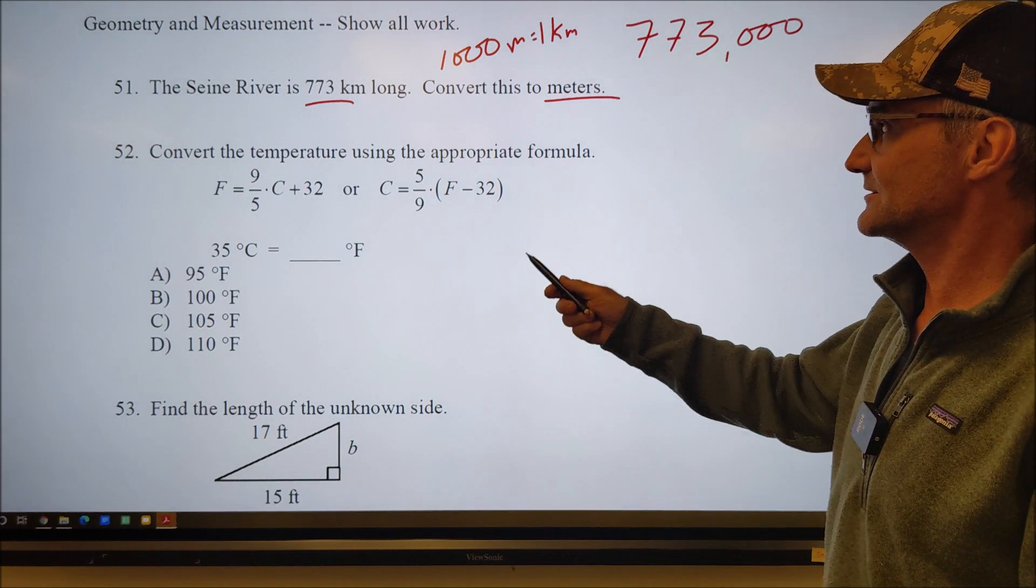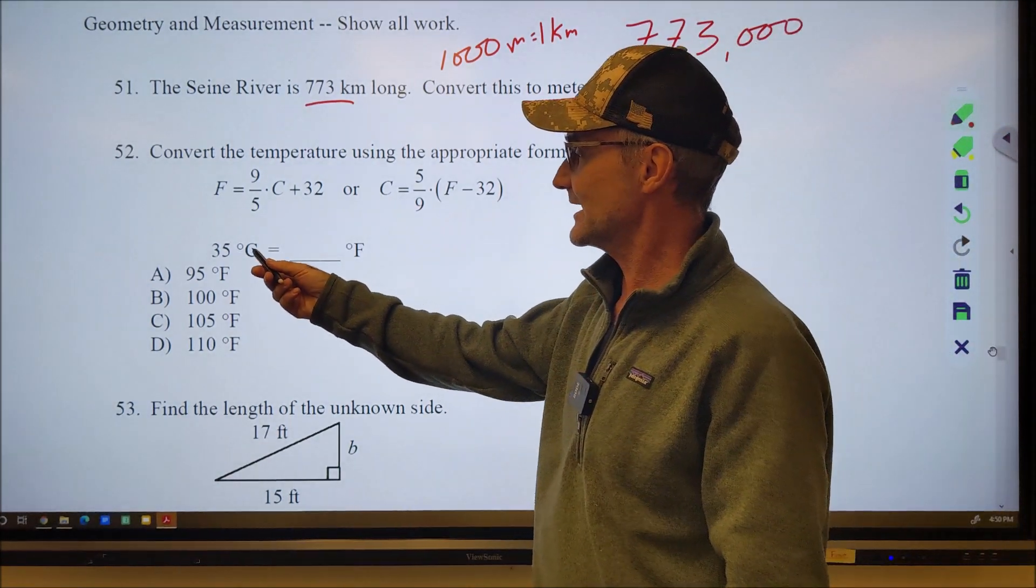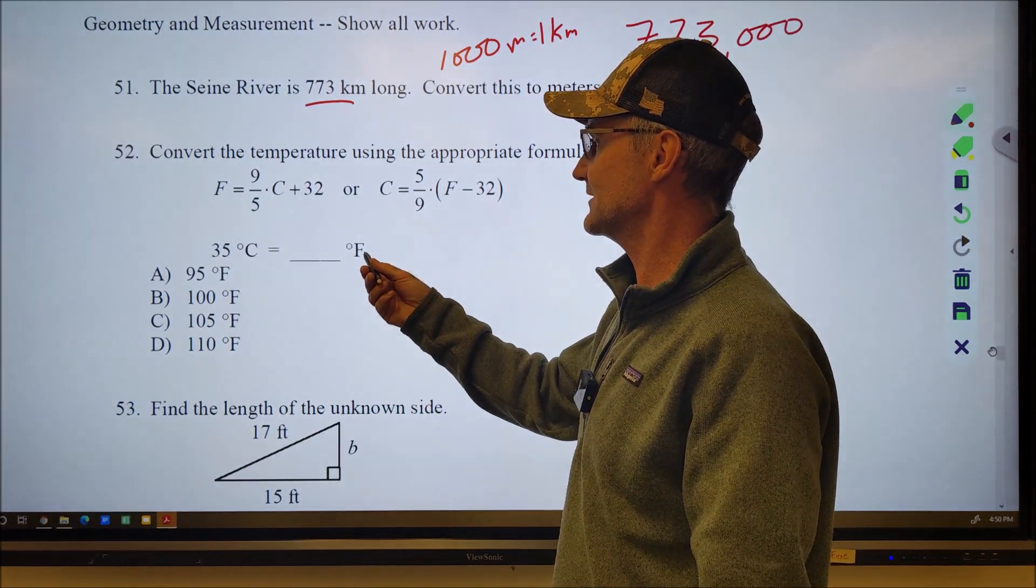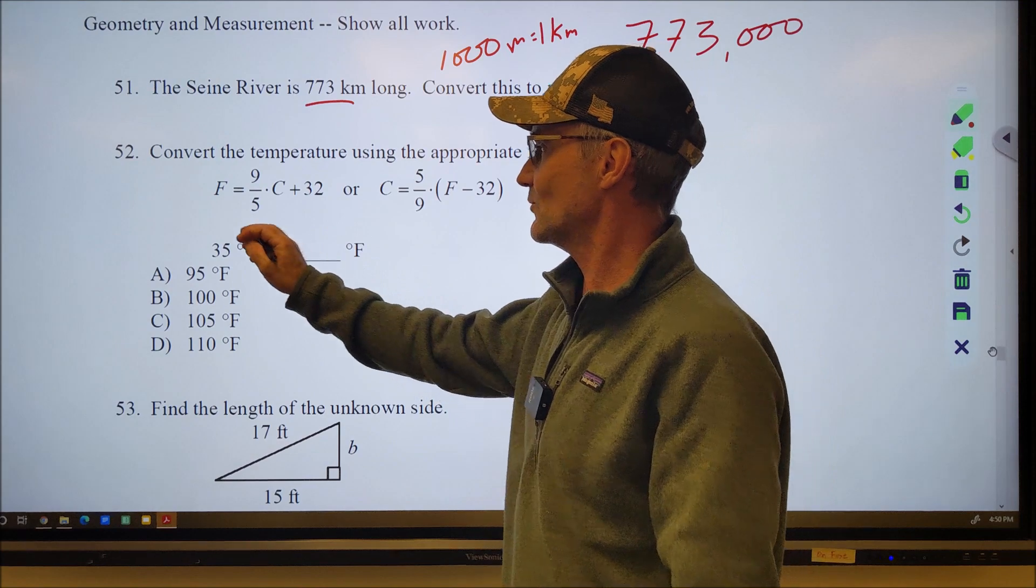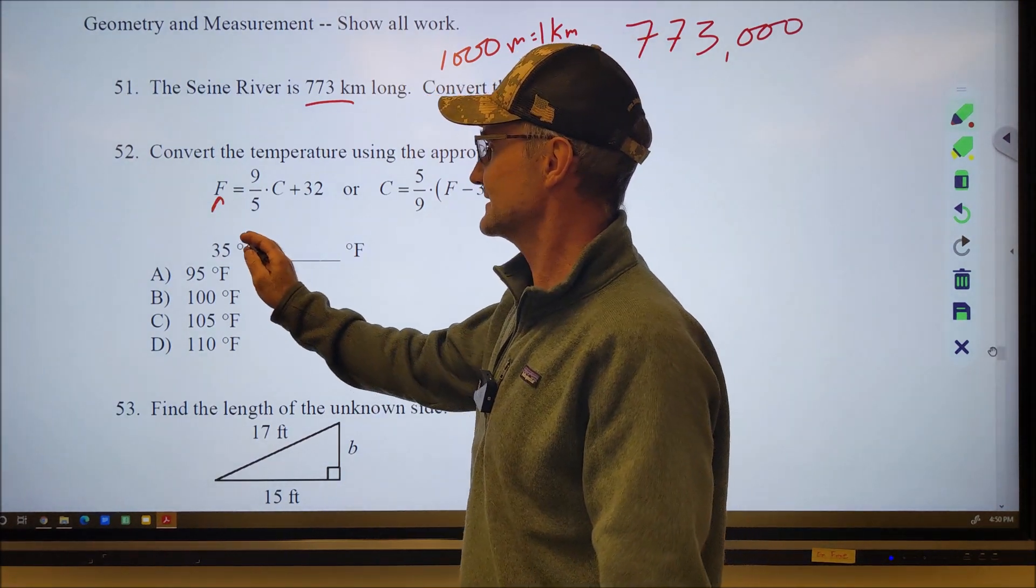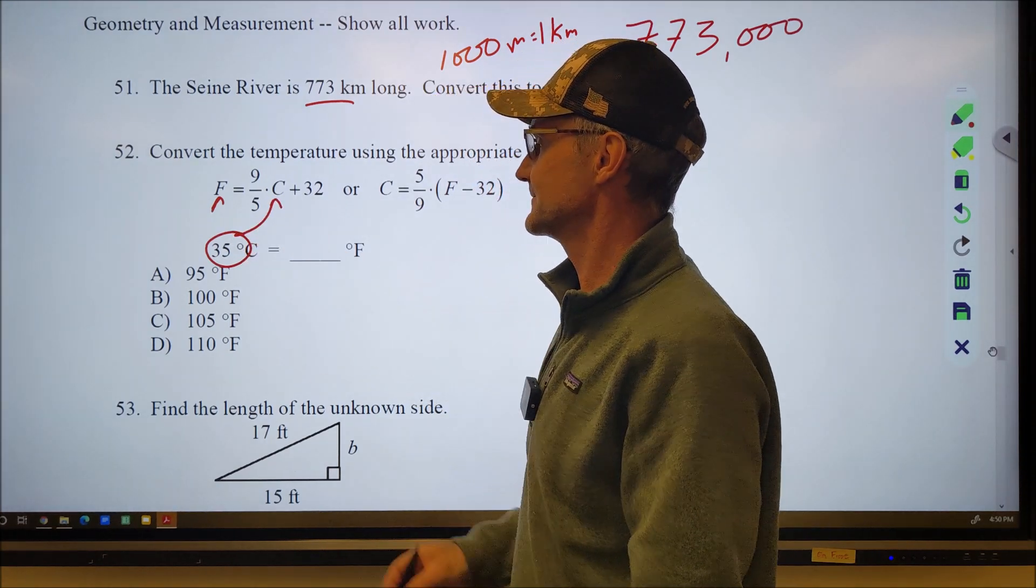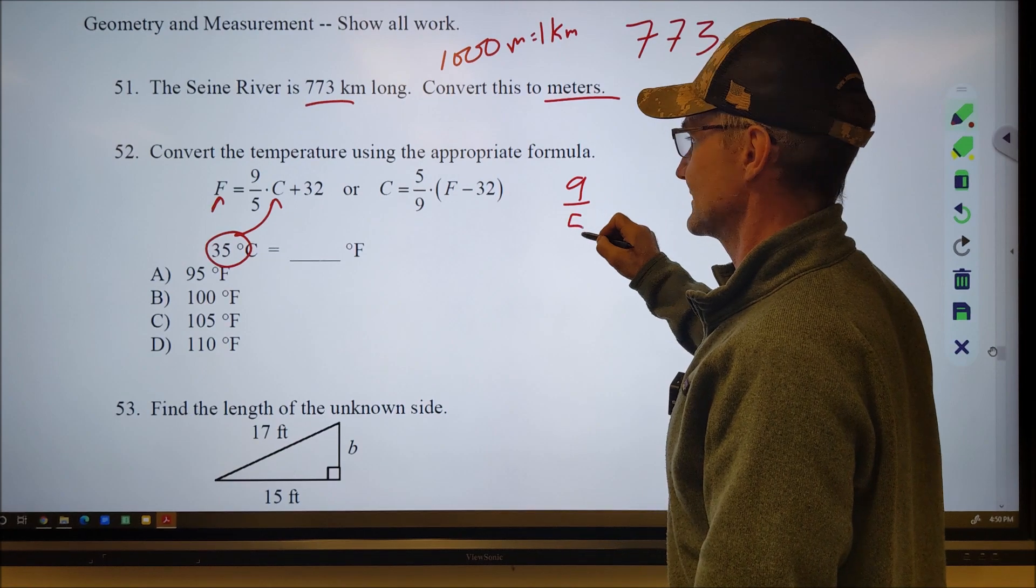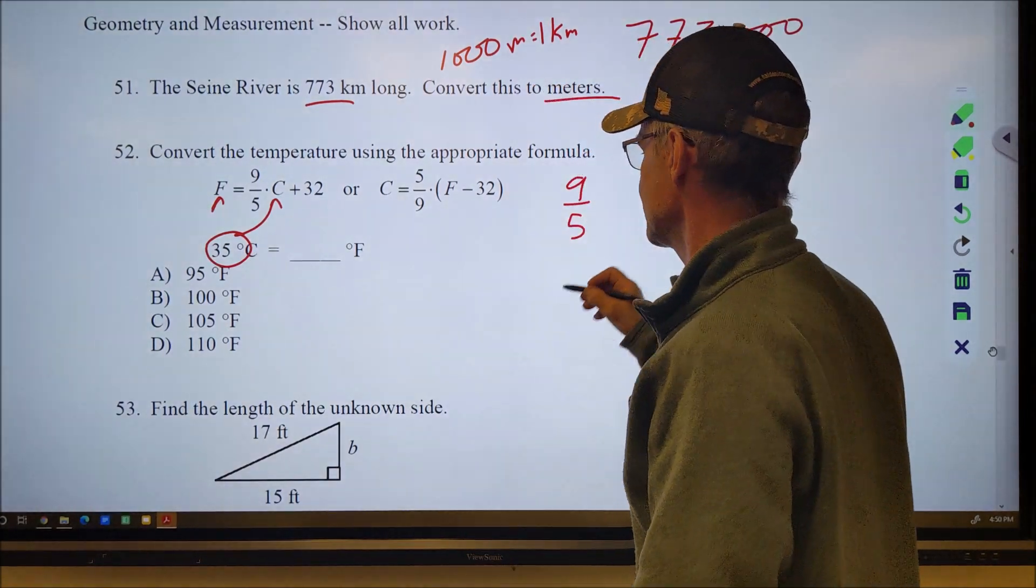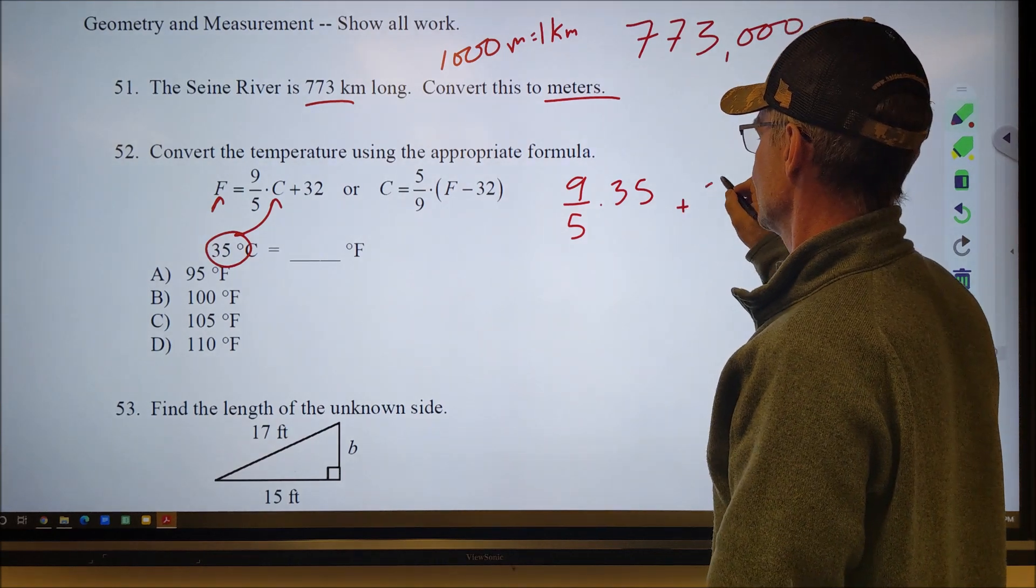Number 52, convert the temperature using the formula below. So I have Celsius, I want Fahrenheit. So that's saying I want this right here. So I know to use that formula and I take that value of Celsius and I plug it in for C. So then I have 9/5 times my temperature in Celsius, 35 plus 32.